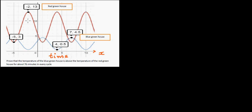In my previous video, we went through the process of writing the equation of the red graph and the blue graph. On the x-axis, this is the time since midnight, and on the y-axis, we have taken the temperature of two greenhouses — one called the red greenhouse and the other the blue greenhouse.